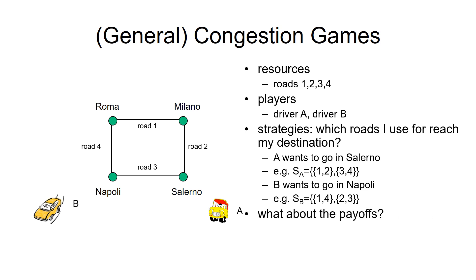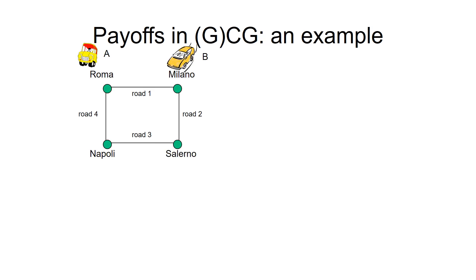What about the payoff? Let's take one approach: smallest indexed road first. So Roma will choose 1 over 4, Milano will also choose 1 over 4.